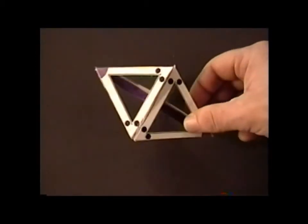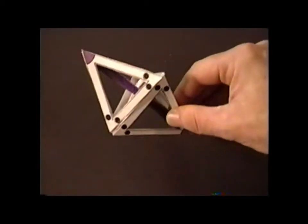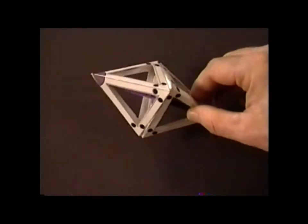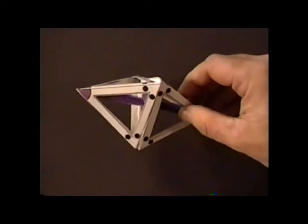One real-world example of this type of structure would be the triiodide ion, I3-1.